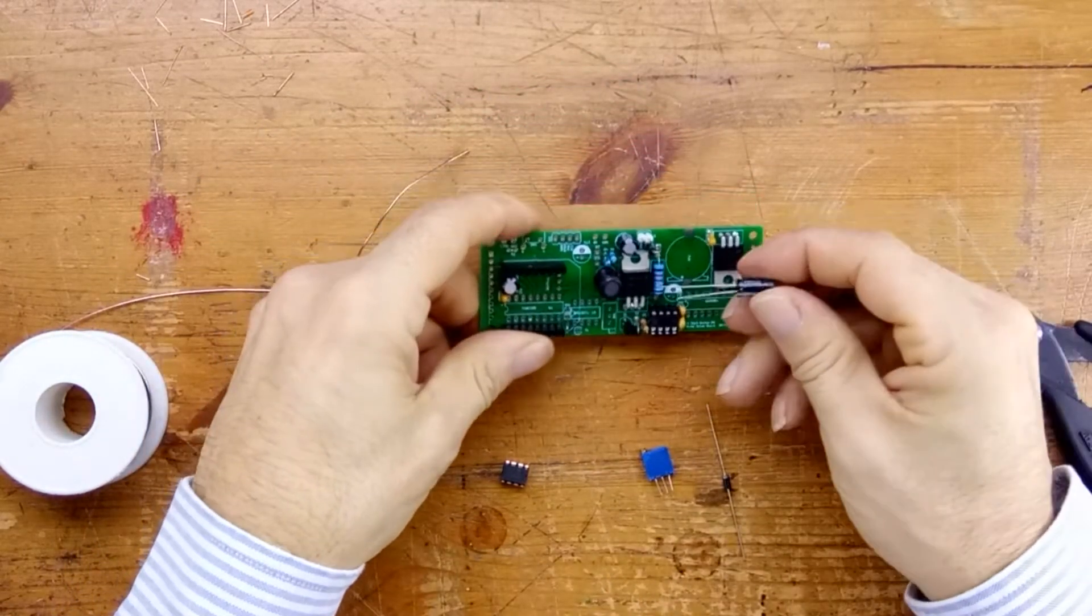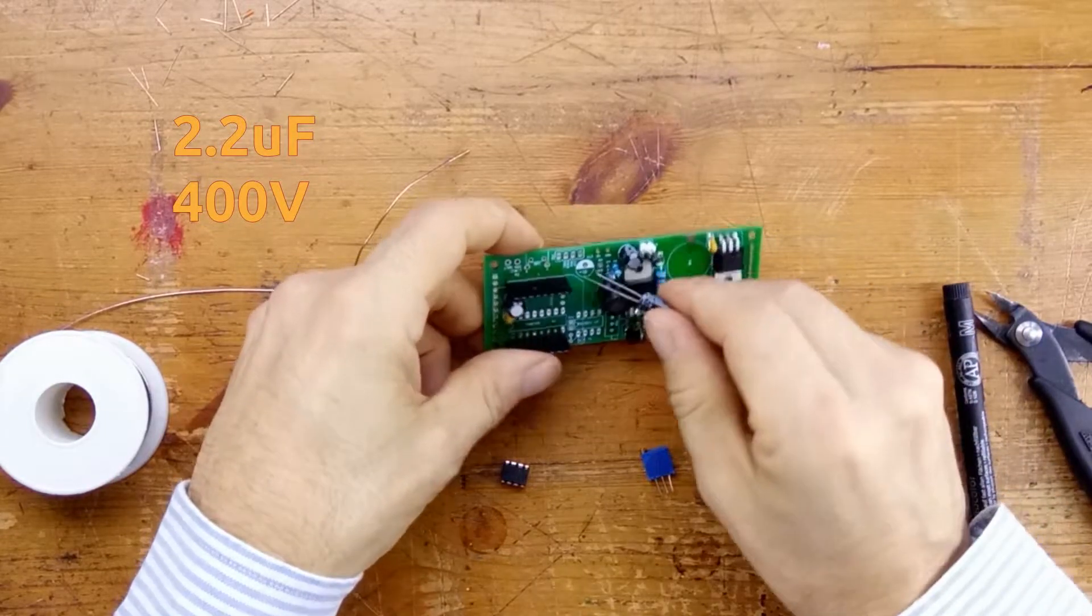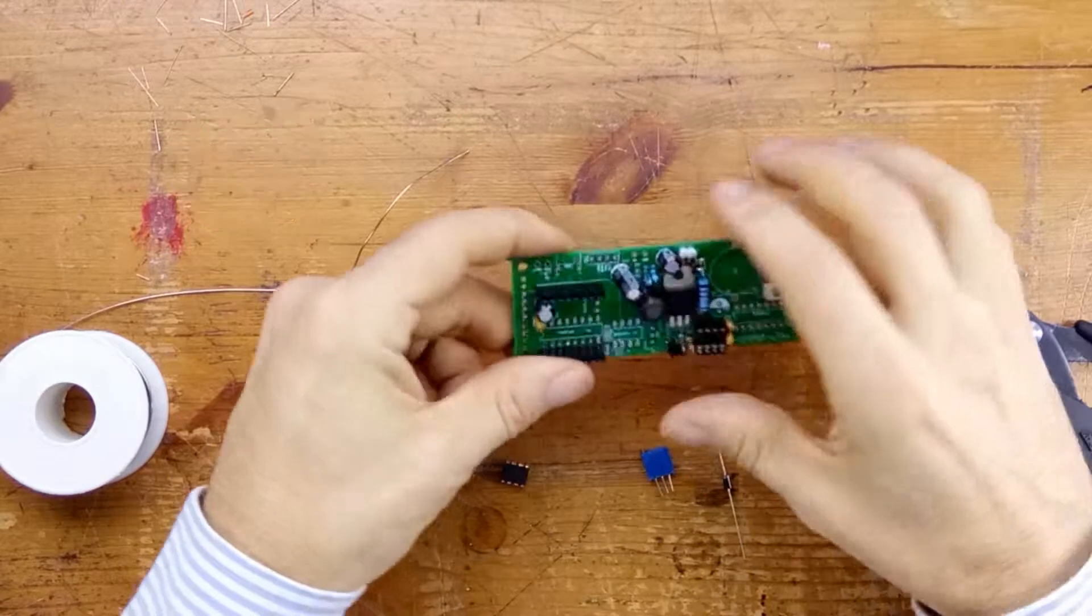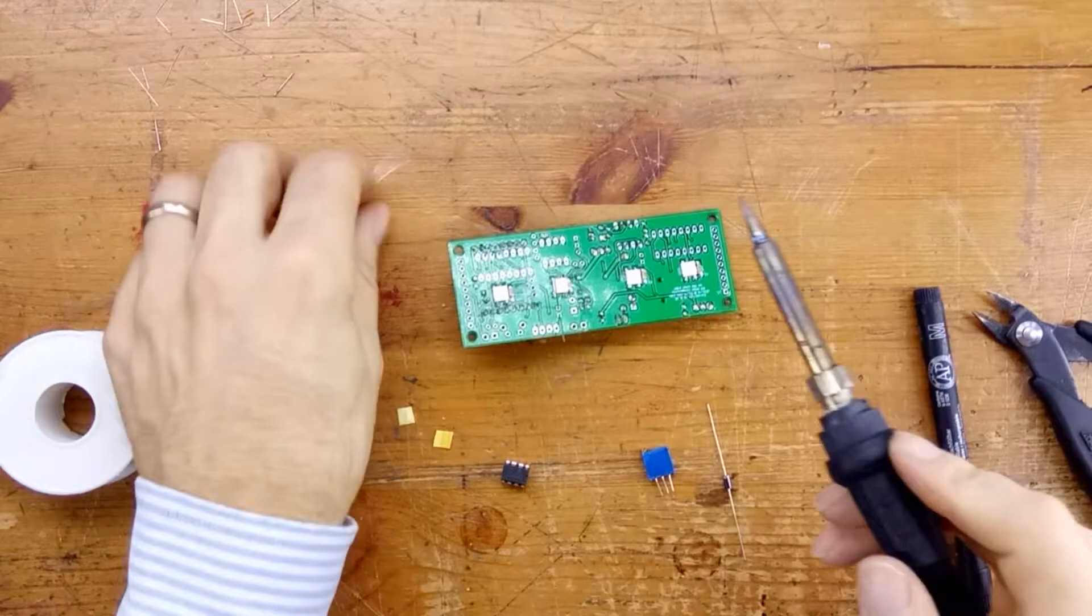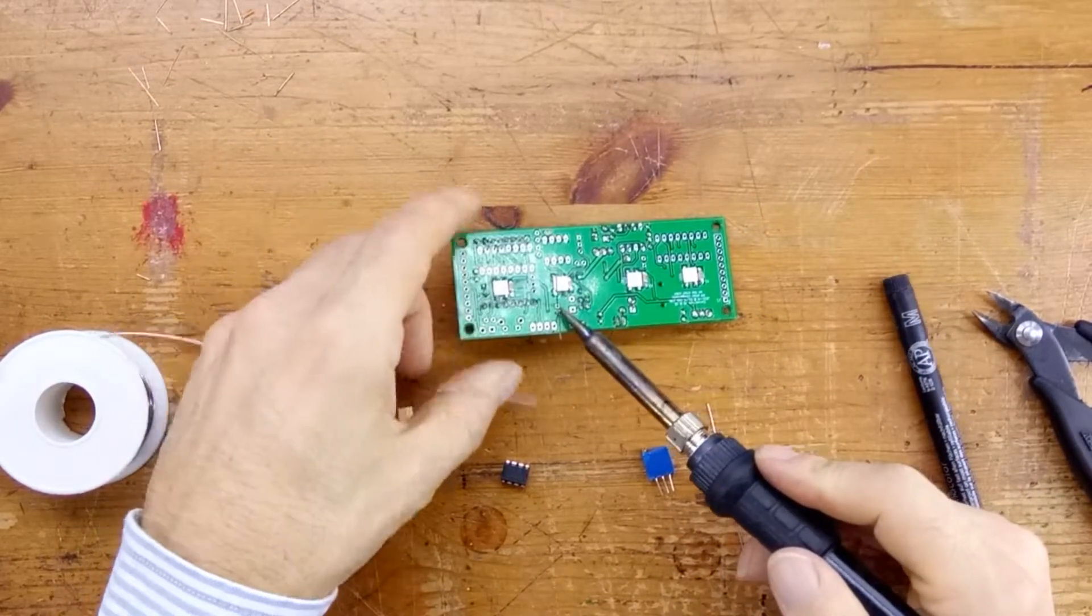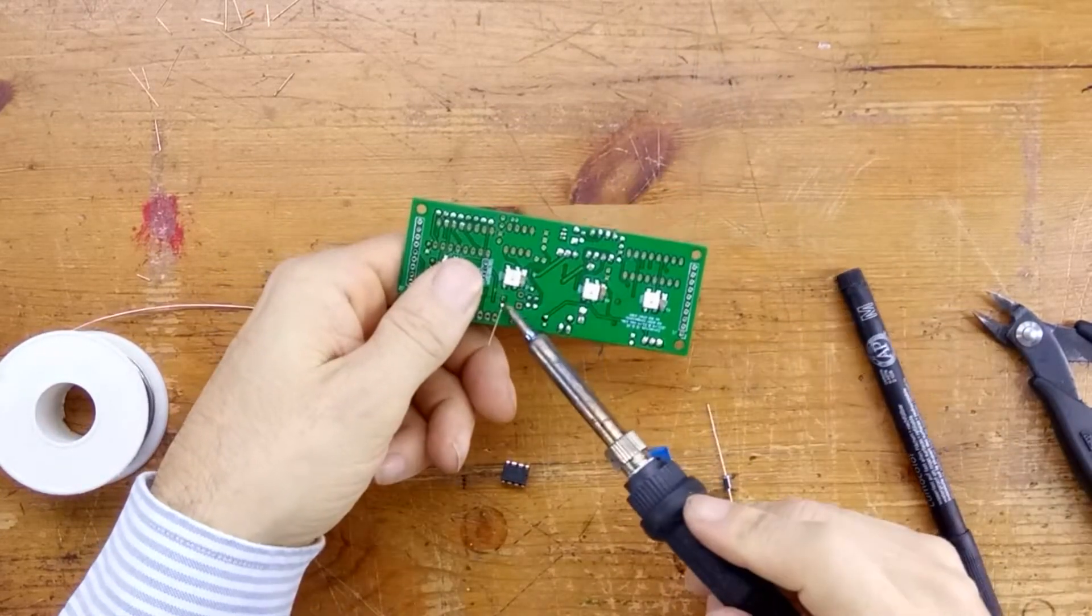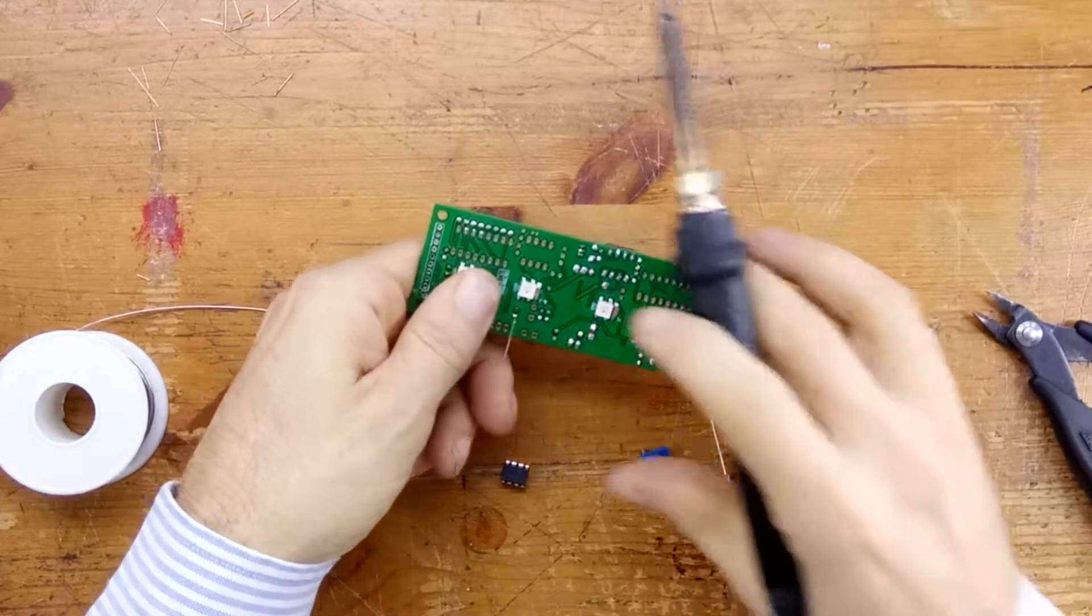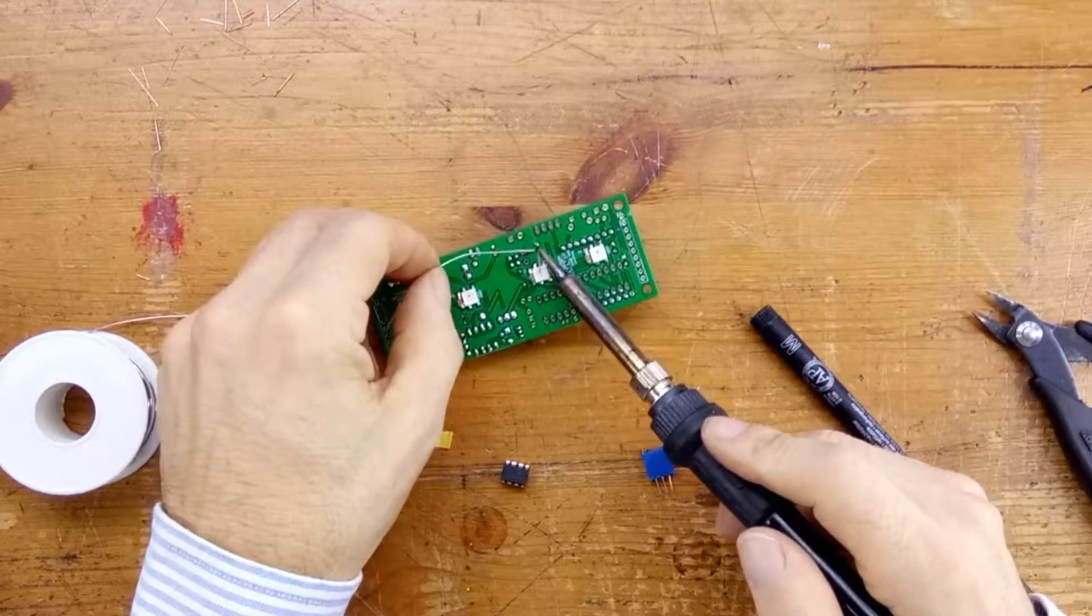Next comes C13, the 2.2 microfarad 400 volt capacitor. Now, this has a white stripe on it, and the white stripe must go to the white half of the semi-circle on the silk screen. Just holding it in place there, making sure it sits firmly so it's physically secure, and then we can solder the other lead as well.